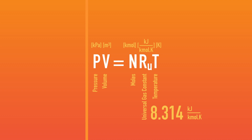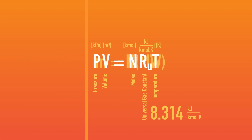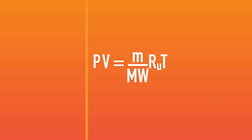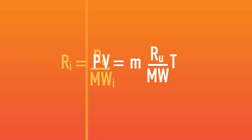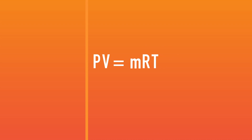Now we can manipulate this equation of state to yield properties that are commonly used in engineering thermodynamics. First, we understand that mass of the gas can be calculated using number of moles of gas times the molecular weight of that gas. So let us replace moles with mass and move molecular weight under the universal gas constant. We can now define a new property, R — a particular gas constant that we get by dividing the universal gas constant by the molecular weight of that gas.